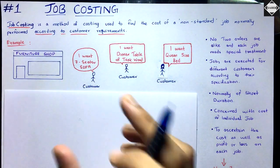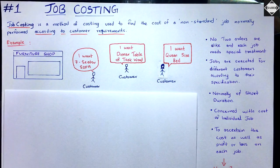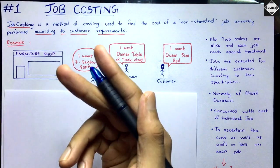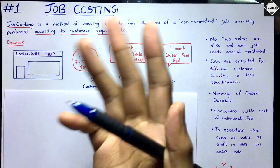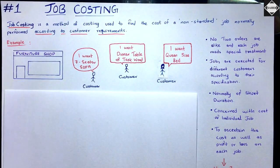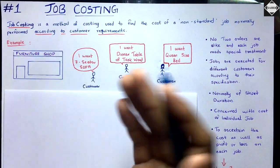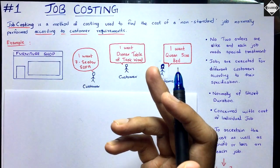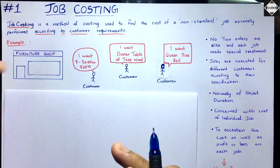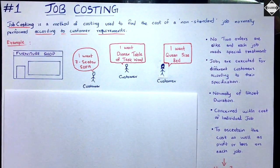This will take a short duration — not like contract costing which can take one, three, or five years. It will take maybe two to three weeks maximum, then it'll be ready and delivered to the customer, who will pay the price the furniture shop asks for.